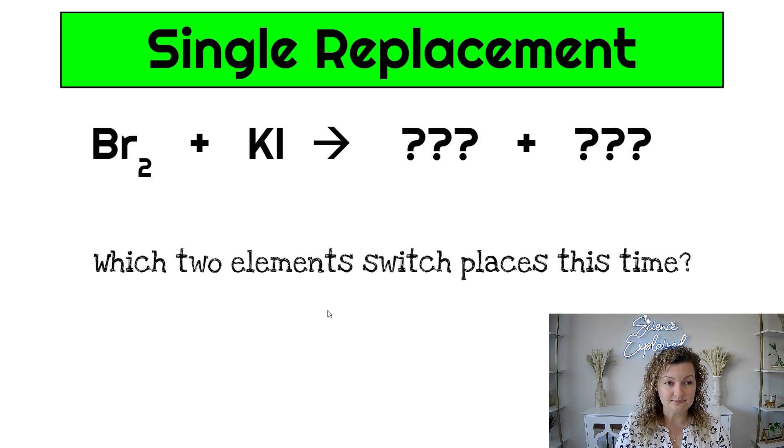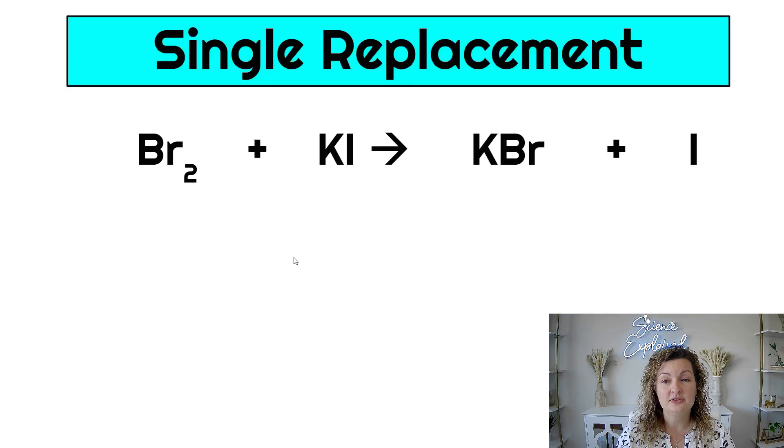Okay, so let's try another one. Take a look at this one, pause your video and see if you can figure out what two we're going to swap in order to get our products correct. All right, let's go ahead and check it out. Bromine is a non-metal, so we have to swap it with another non-metal. Iodine is a non-metal and potassium is a metal. So we're going to be swapping it with iodine. So it's going to end up looking something like this. KBr plus I.